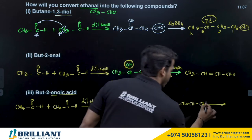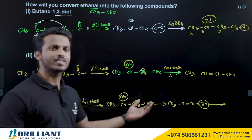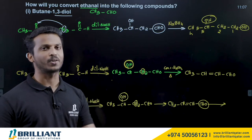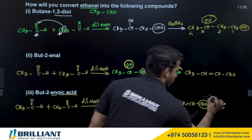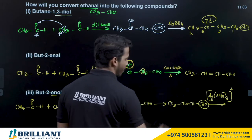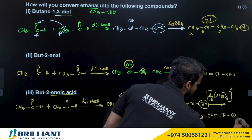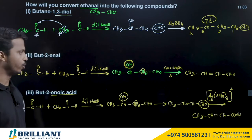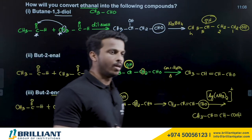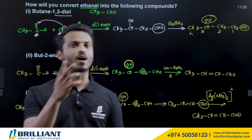Now we need to convert the aldehyde to a carboxylic acid through oxidation. Using Tollens' reagent — [Ag(NH3)2]+ — as the oxidizing agent, the aldehyde is oxidized to give CH3–CH=CH–COOH, which is but-2-enoic acid. So: aldol condensation → dehydration → oxidation.